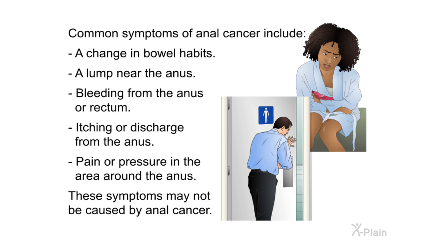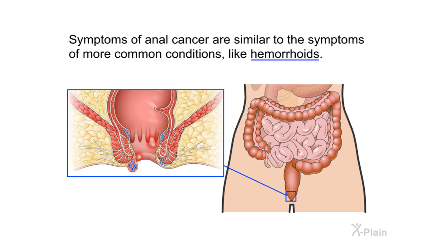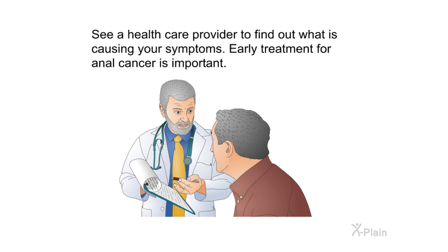Common symptoms of anal cancer include a change in bowel habits, a lump near the anus, bleeding from the anus or rectum, itching or discharge from the anus, and pain or pressure in the area around the anus. These symptoms may not be caused by anal cancer — they are similar to symptoms of more common conditions like hemorrhoids. See a health care provider to find out what is causing your symptoms, as early treatment for anal cancer is important.